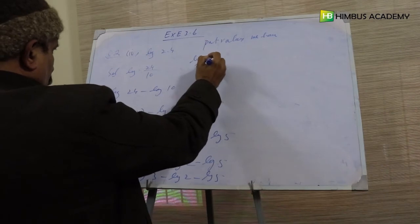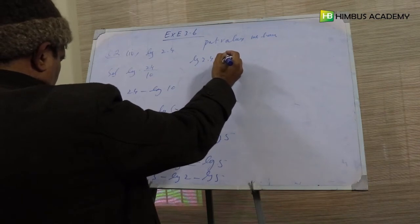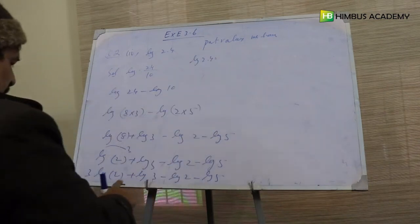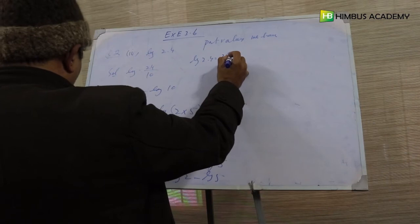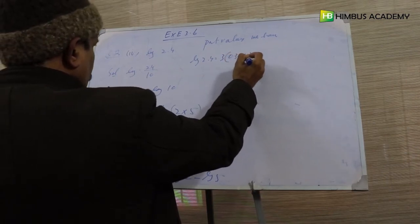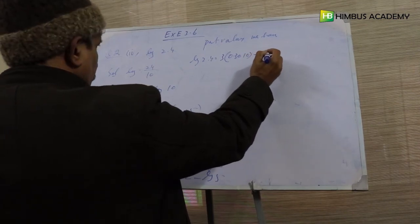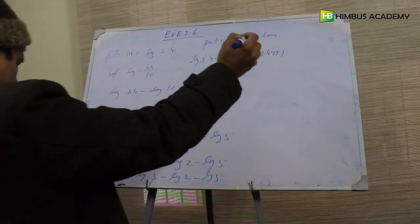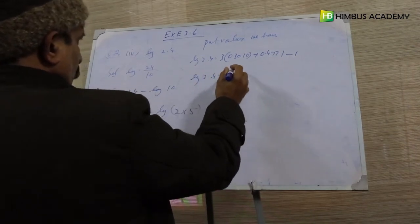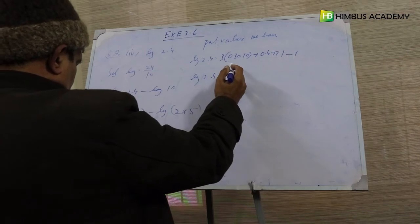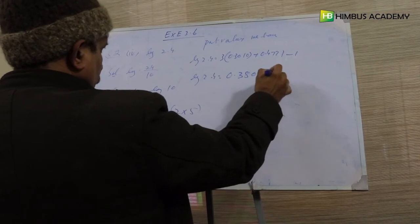Log of 2.4 is equal to: 3 × 0.3010 plus 0.4771 minus 1 (کیونکہ log of 10 = 1)۔ Multiplying and simplifying: 0.9030 + 0.4771 − 1 = 0.3801. So log of 2.4 is equal to 0.3801. یہ ہمارا answer ہوگیا۔